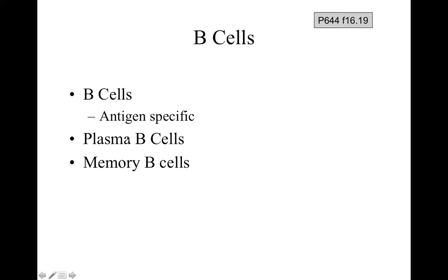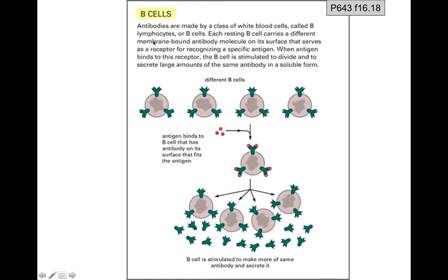There are many different B cells, and antibodies are membrane-bound on these B cells. When the correct antigen comes along — like little red circle antigens — they don't fit most B cells, but they're a perfect fit for one, like a Goldilocks antigen. When they bind to that B cell, it activates it and this B cell makes a bunch of copies of itself.